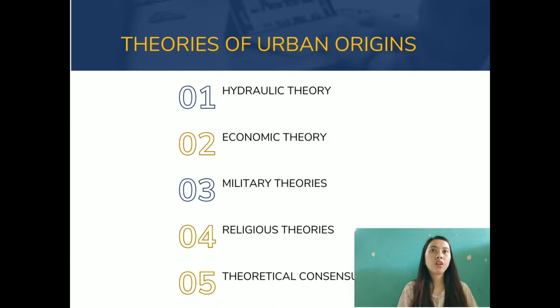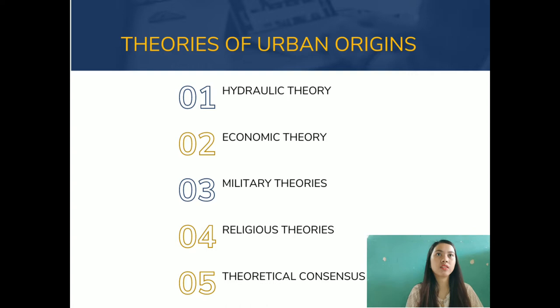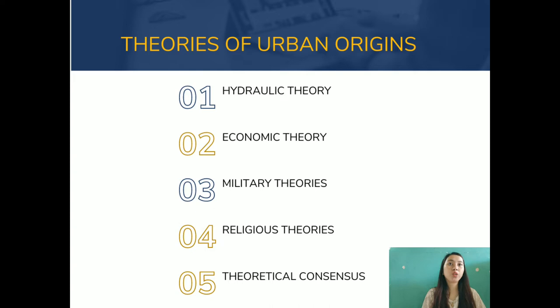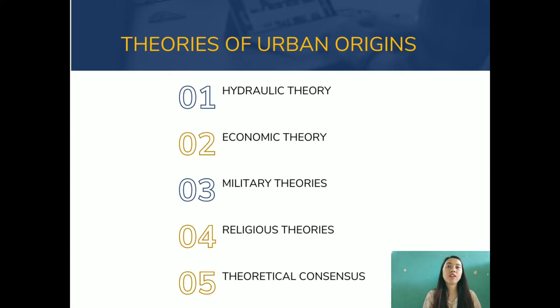The theories of urban origins include the hydraulic theory, economic theory, military theories, religious theories, and theoretical consensus. The hydraulic theory identifies the importance of irrigation for urban development, especially in the semi-arid climates of the Middle East where the agricultural revolution took place. Wittfogel (1957) argued that large-scale water management required centralized coordination, which in turn required concentrated settlement. The principal characteristics of a hydraulic society are: it permits an intensification of agriculture, it involves a particular division of labor, and it necessitates cooperation on a large scale.